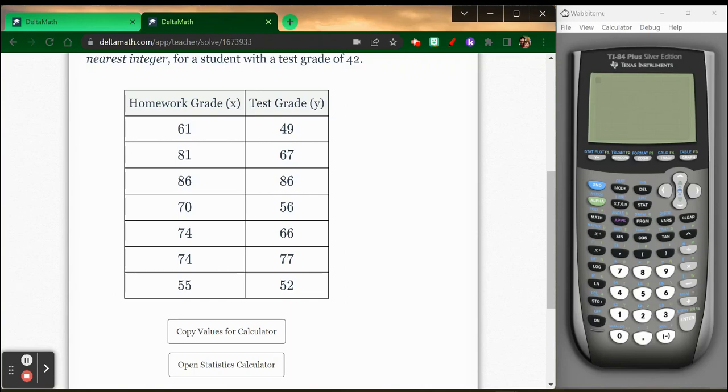So I'm going to go over here. I'm going to go to stat. Edit. Now I have lists in here from the last problem that we just did. So I want to clear this out. I go up to the top. I highlight my list. I hit clear. I press down. Whole list disappears. I do that for list one. Clear. Down. Whole list disappears.